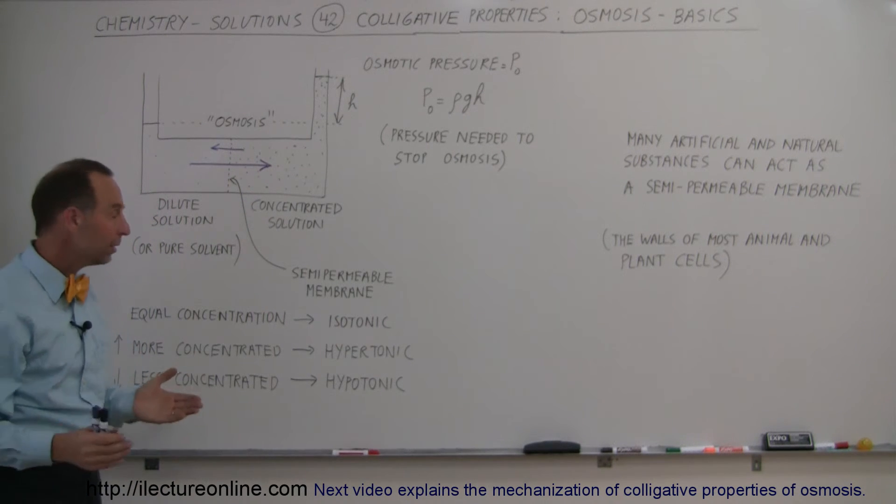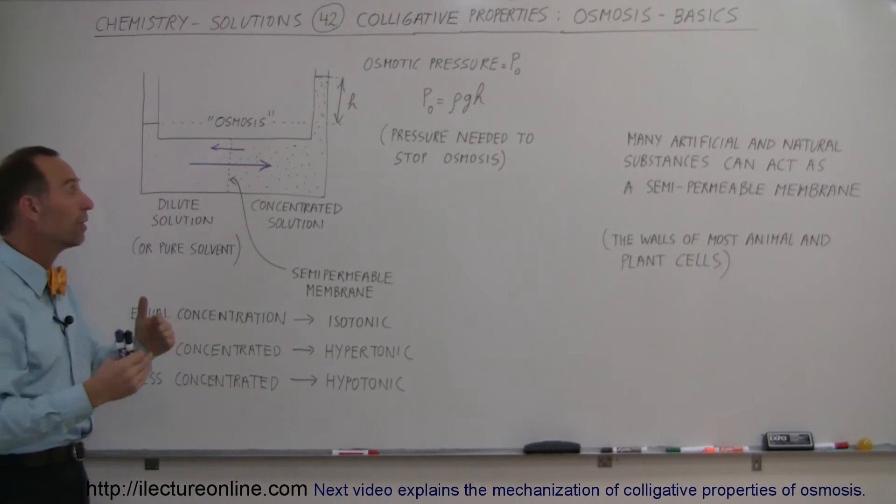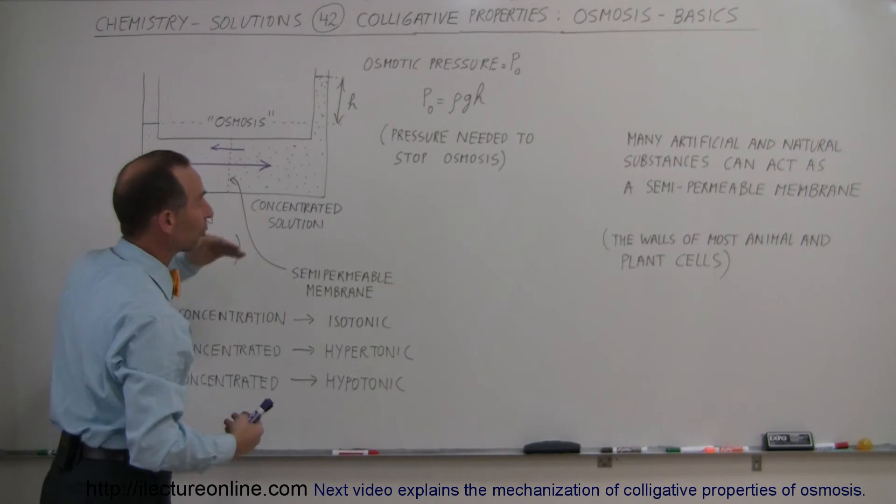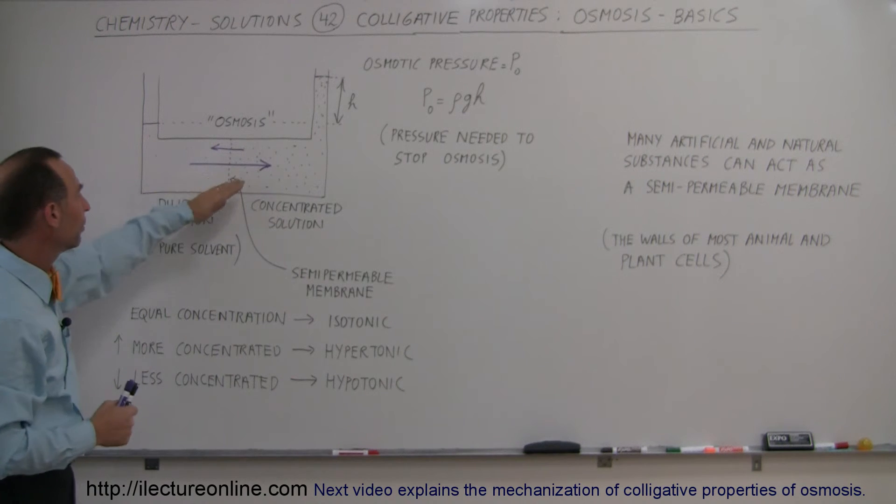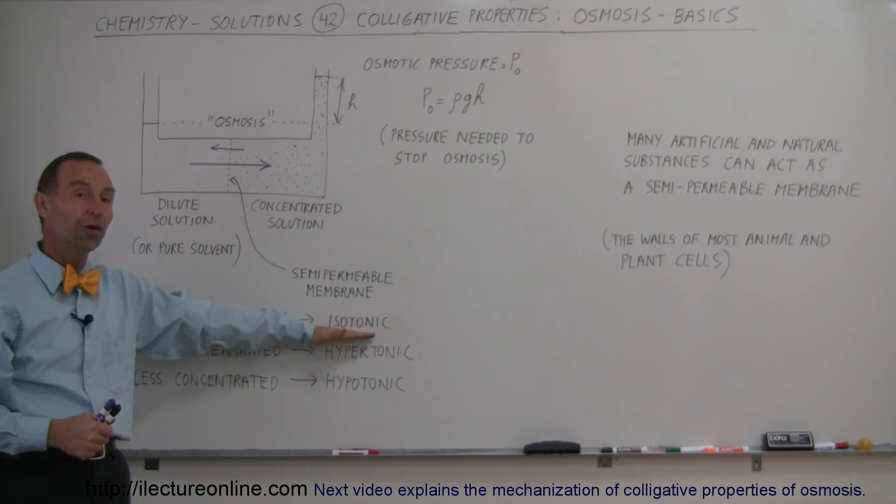Now, when the two sides have an equal concentration, of course, there would be no osmosis because then you have the same amount of water molecules travel from right to left as from left to right and so there would be no difference, no pressure difference and so everything would stay the same. When that happens, we call that the solutions are isotonic.